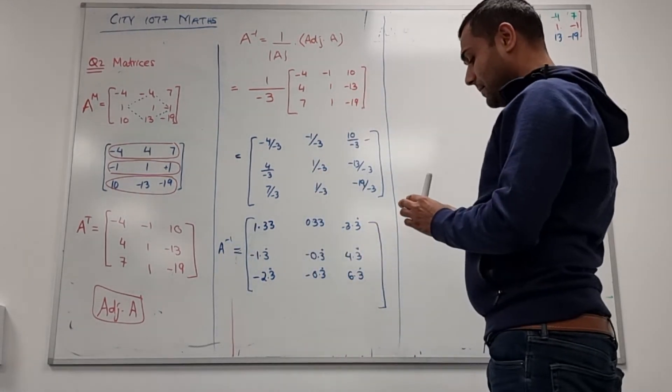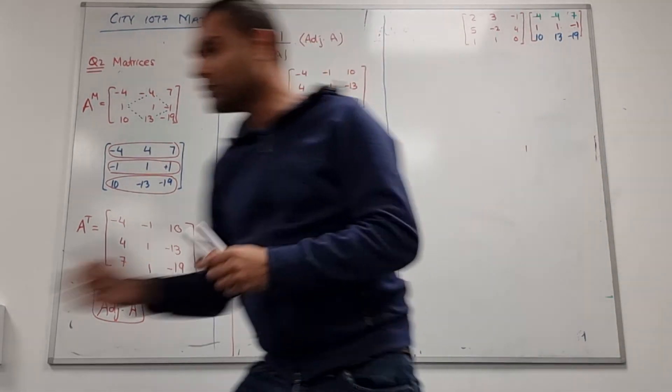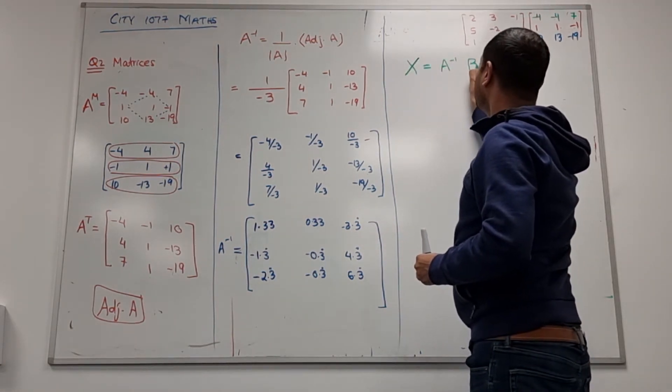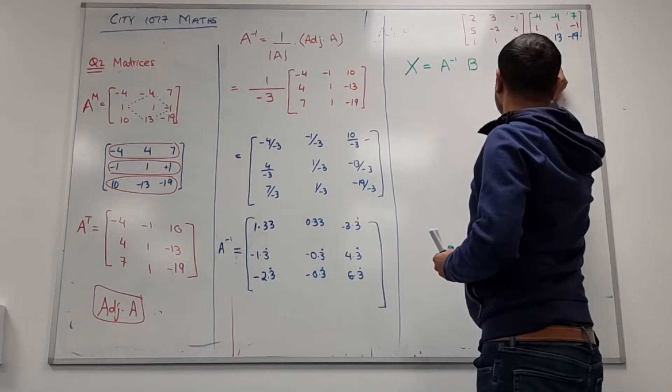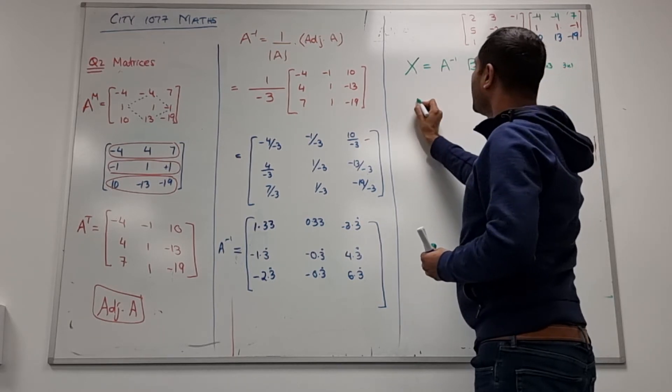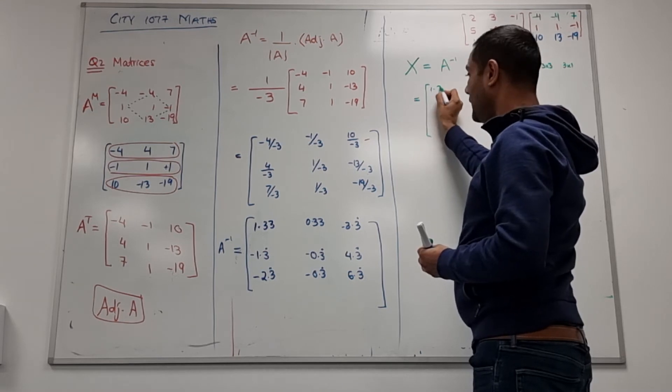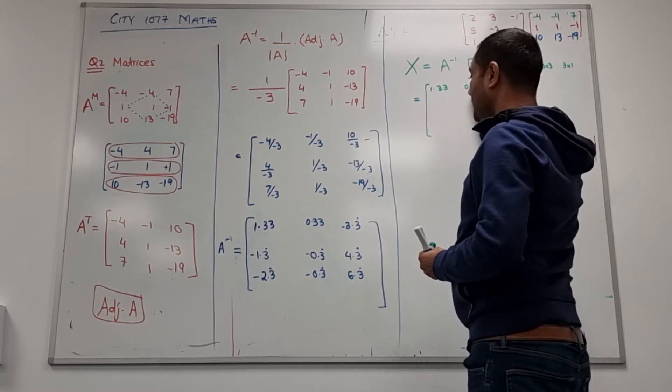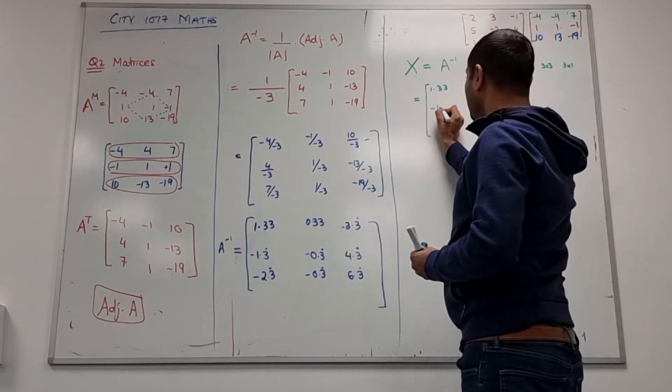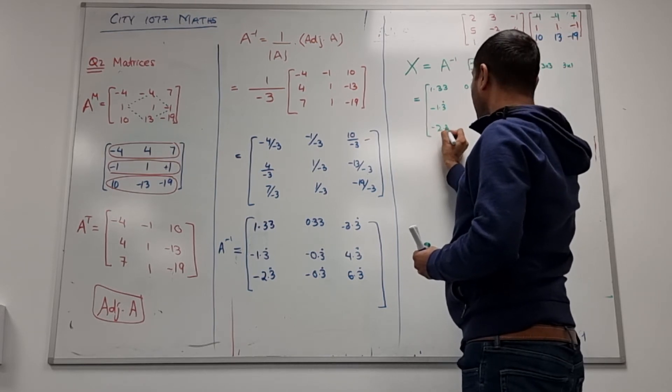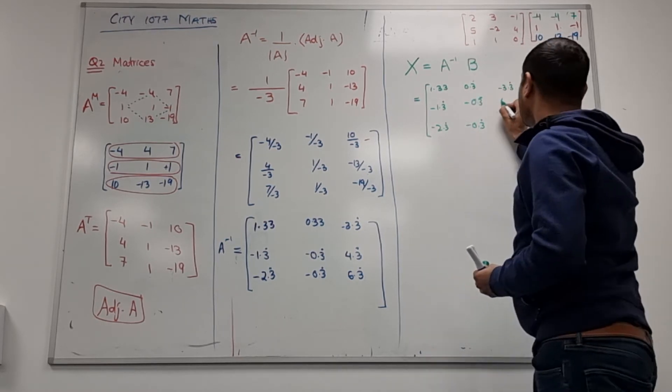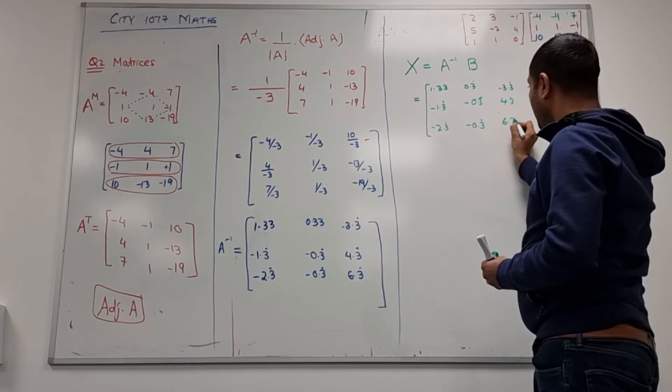Now if you remember the formula we are finding the x, so the x is A inverse times B. So A inverse I got: 1.33, 0.33, minus 3.3 recurring, minus 1.3 recurring, minus 0.3 recurring, 4.3 recurring, minus 2.3 recurring, minus 0.3 recurring, 6.3 recurring.